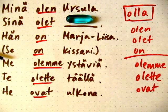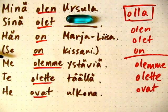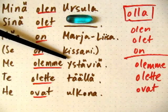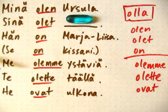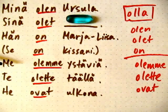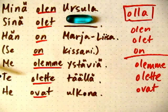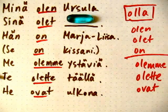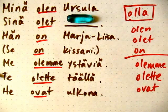Next we have Me olemme ystäviä. Ystäviä is a form of the word friends — we are friends. Te is the plural for you and it's also the formal version of you. Te olette täällä — you are here, you all are here.